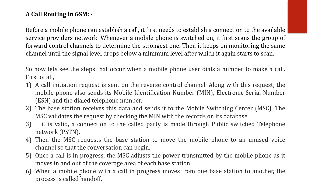After the signal level drops below the minimum level, the mobile phone again starts to scan. If you want to provide a specific connection for your mobile station, the phone scans the forward control channel and identifies the strongest signal. If the level drops down, it will again start to scan.